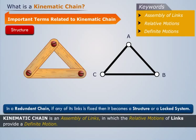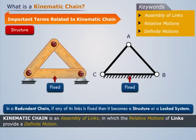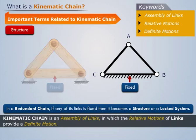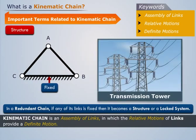And, in a redundant chain, if any of its links is fixed, then it becomes a structure or a locked system. A transmission tower constructed by joining the steel members is a good example of structure.